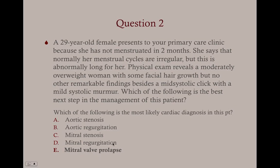This patient is probably pregnant because she hasn't menstruated in two months. A mid-systolic click with or without a systolic murmur is characteristic of mitral valve prolapse — that's what you should be honing in on. Mitral valve prolapse tends to present for the first time in pregnant women because when you're pregnant, your intravascular volume increases, leading to a more pronounced murmur in mitral valve prolapse.